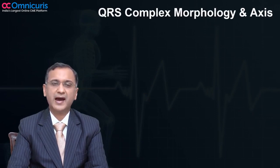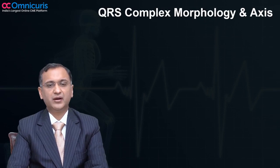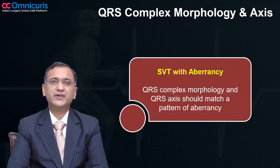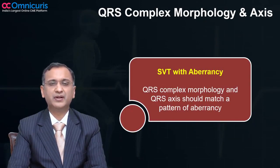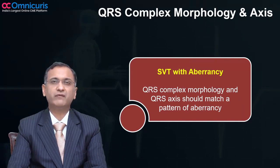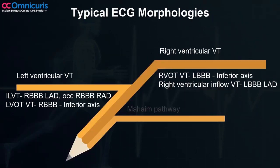The next important factor that helps us in arriving at a diagnosis in broad complex tachycardia is the QRS complex morphology and its axis. Generally, if there's an SVT with aberrancy, the QRS complex morphology and the QRS axis would resemble the QRS pattern seen in a patient who is in any sort of right bundle branch or left bundle branch form of aberrancy.